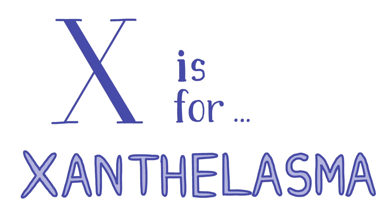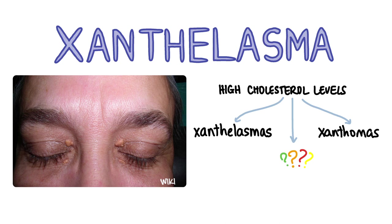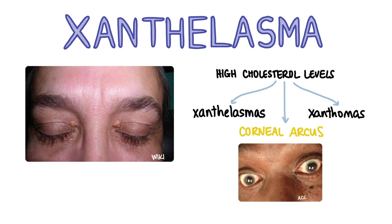X is for xanthelasma. Xanthelasma are benign yellow flat plaques that occur on the upper or lower eyelids, representing areas of lipid-containing macrophages. In other areas of the body the individual lesion would be called a xanthoma, and xanthelasma is the most common xanthoma. Another clinical examination sign of hypercholesterolaemia is corneal arcus. The most important investigation is fasting serum lipid levels. Also carry out a cardiovascular risk assessment, as high lipid levels put patients at risk of cardiovascular disease like strokes and MIs. The most important management is reducing lipid levels through improving diet and increasing exercise. Treatment options include surgical excision, laser treatment and electrocautery, although there is a risk of recurrence.